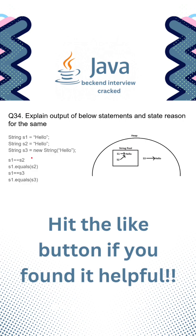So here are some questions. What would be the value of s1 == s2? This will be returning true because both refer to the same literal in the string constant pool.